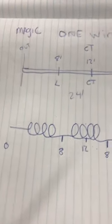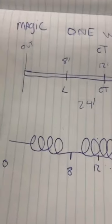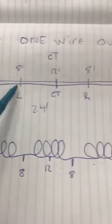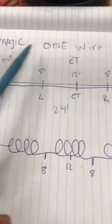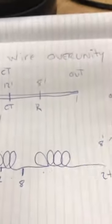How's it going everyone, another device. This is the magic one wire over unity device. As you can see, we have one wire. It's a magic one wire over unity device.